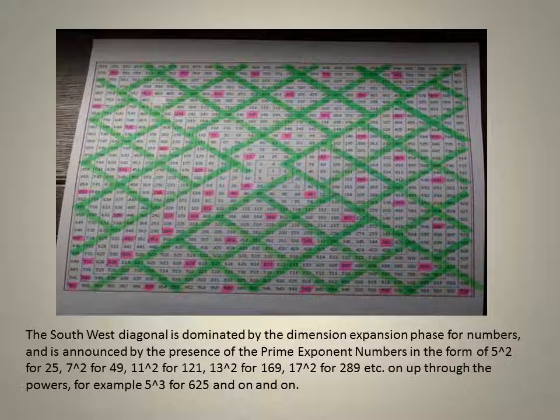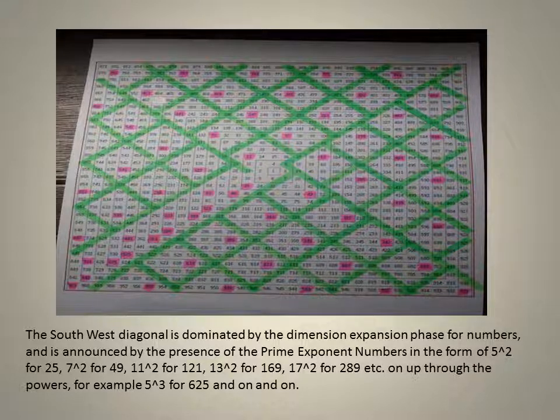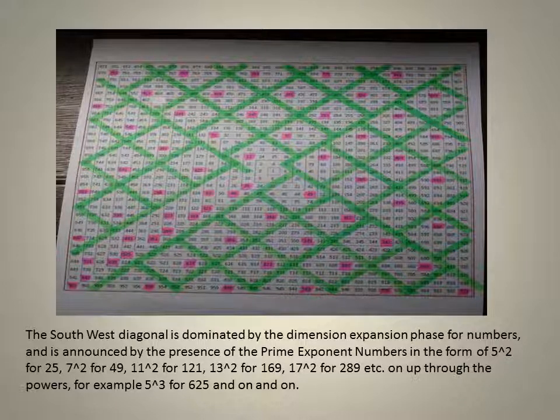The southwest diagonal is dominated by prime exponent numbers in the form of 5 squared for 25, 7 squared for 49, 11 squared for 121, etc. On up through the powers, for example, 5 cubed for 625, and on and on.